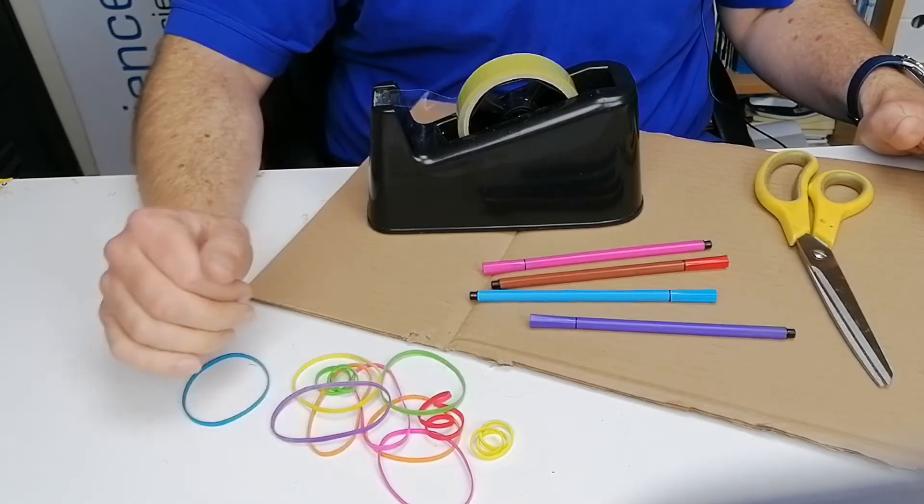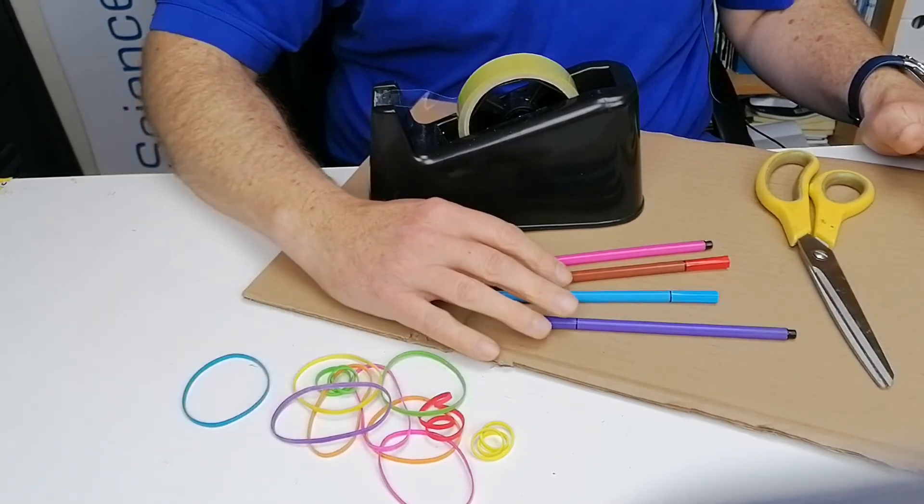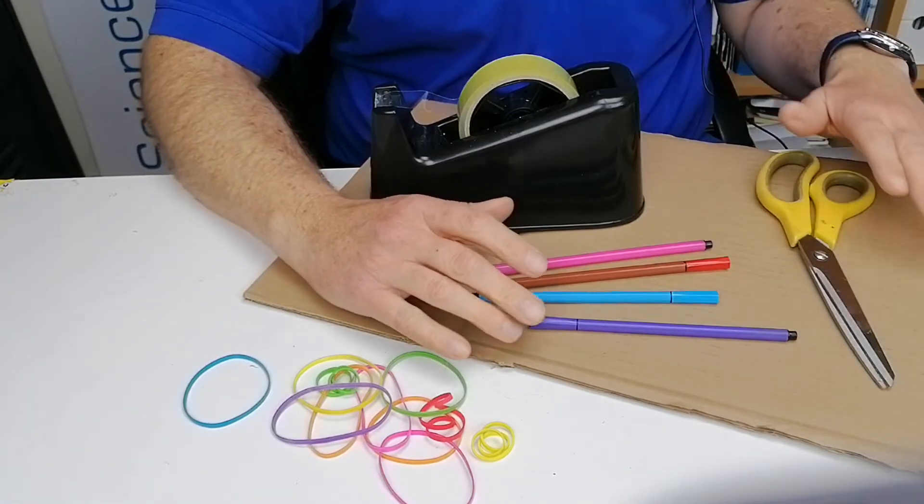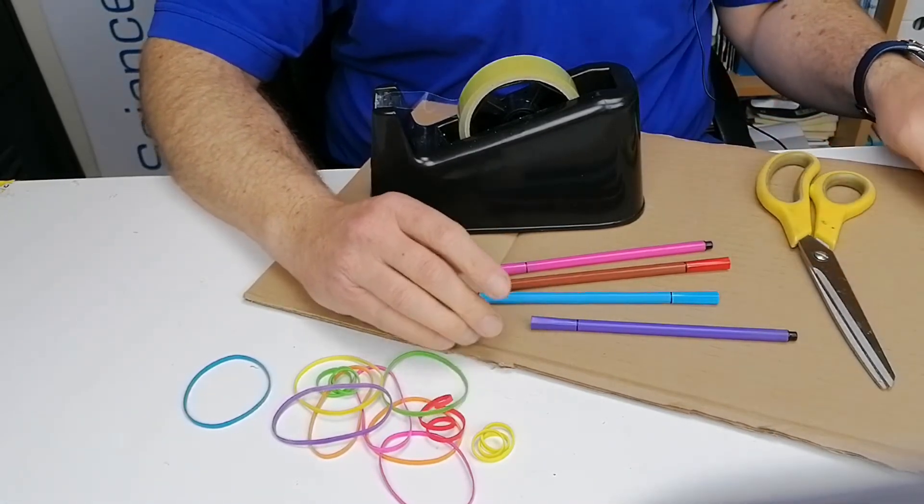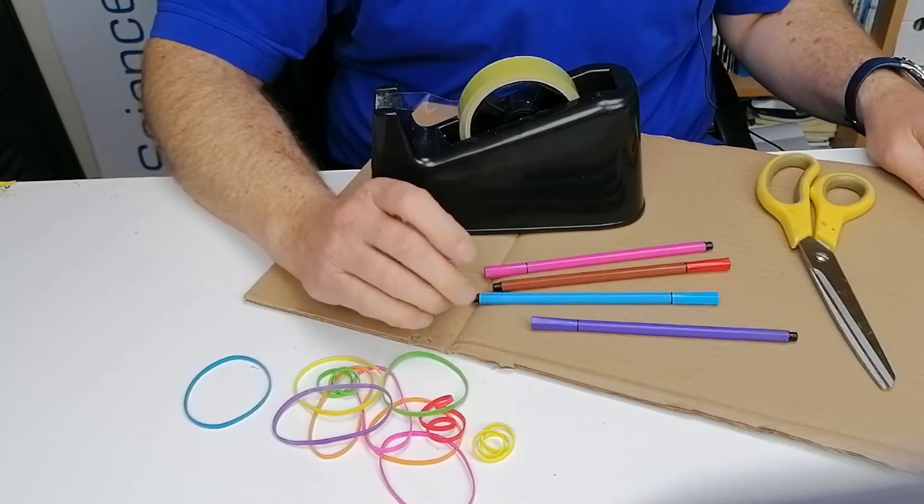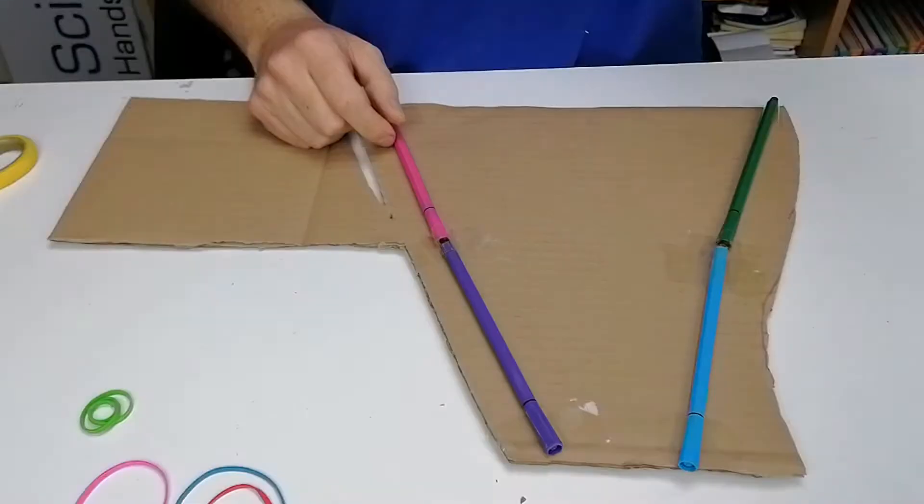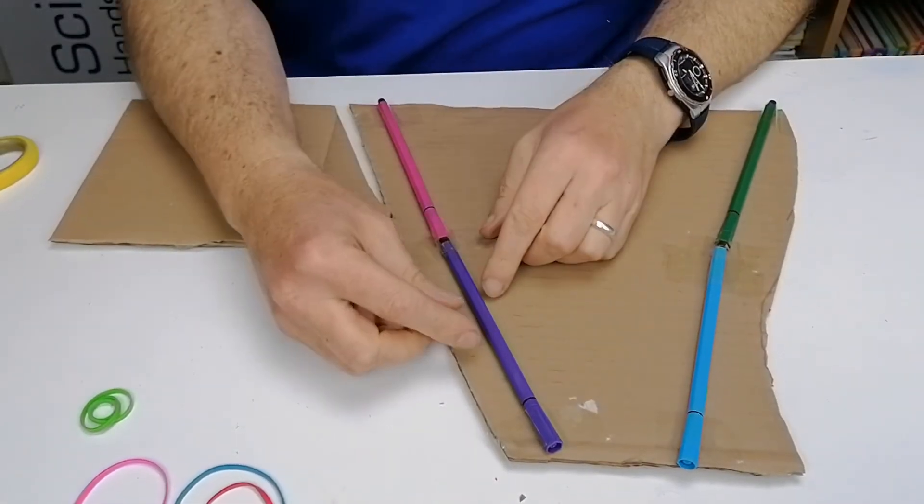So what you'll need for this is some elastic bands, they can all be the same size, and you're going to need some markers, scissors, some sellotape, and you're going to need heavy thick corrugated cardboard from a cardboard box. I've tried this with a cereal box and it's just not strong enough. The first thing you need to do